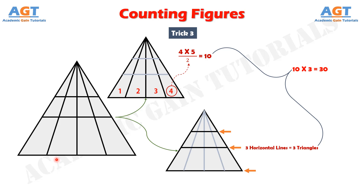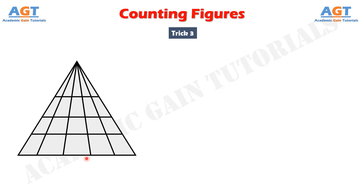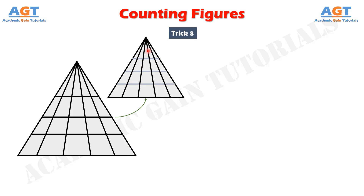Let's see another practice example to make this trick crystal clear. Here is another figure — can you find out how many triangles are in it? Consider only the non-horizontal lines first. Serially number the internal triangles: 1, 2, 3, 4, and 5. Taking the last digit 5, the immediate next number is 6. Multiplying 5 and 6 gives 30, divide by 2, so we get 15. Total number of triangles due to these lines is 15.